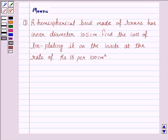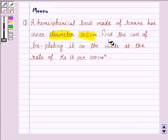Hello and welcome to the session. Let us discuss the following question. It says a hemispherical bowl made of brass has inner diameter 10.5 cm. Find the cost of tin plating it on the inside at the rate of Rs. 16 per 100 cm square.